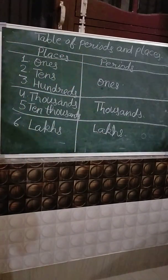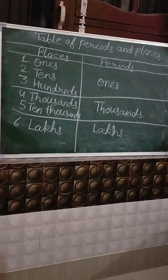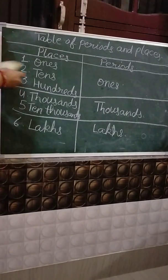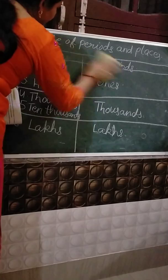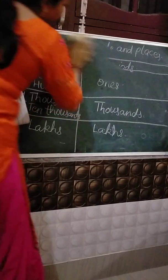The second sum is: name the places in the ones period and the thousands period.